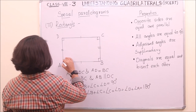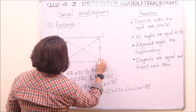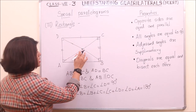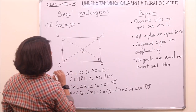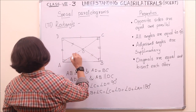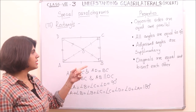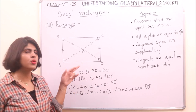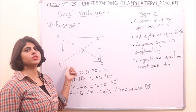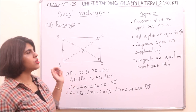Next property: diagonals are equal and bisect each other. Considering diagonal AC and diagonal BD with intersection point O, DO equals OB and AO equals OC — so the diagonals bisect each other. Also, AC equals BD — the diagonals are equal. This property was proved in the case of a square, and can be proved in a similar way for rectangles.